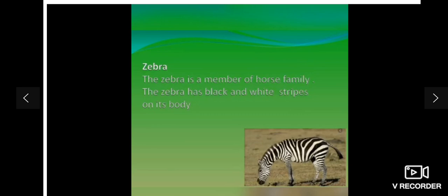This is zebra. Zebra is a member of the horse family. The zebra has black and white stripes on its body.